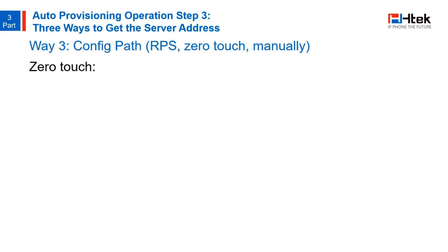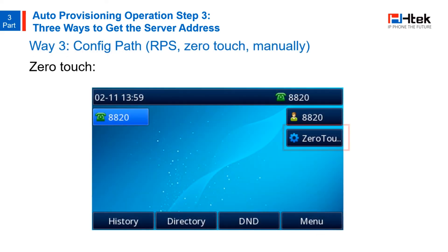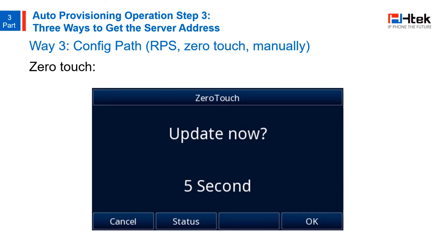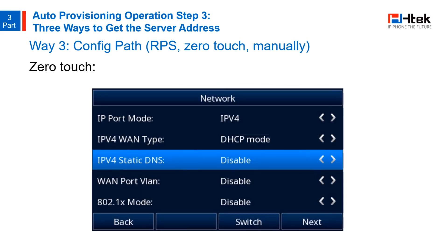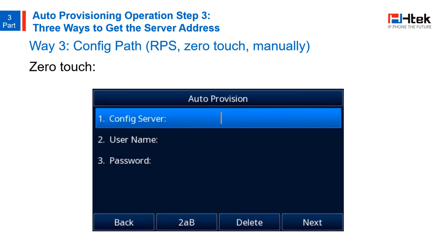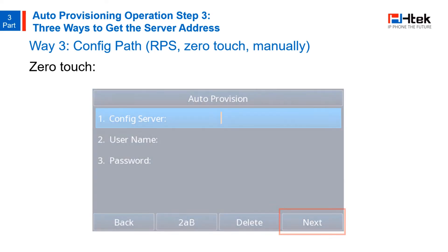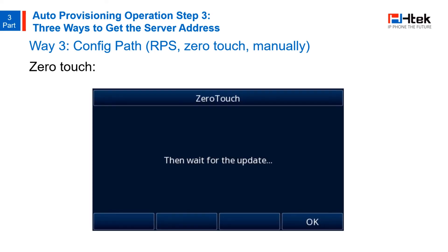Zero Touch is a DSS key that you can set, which allows you to configure the network parameters and provisioning server address via the IP phone's user interface. When you press it, if you press OK during the wait time — which can be set on the phone's webpage — you'll enter the network setting interface. After setting, press Next to get to the auto-provision settings interface. After setting that, press Next again, and the auto-provisioning is conducted.